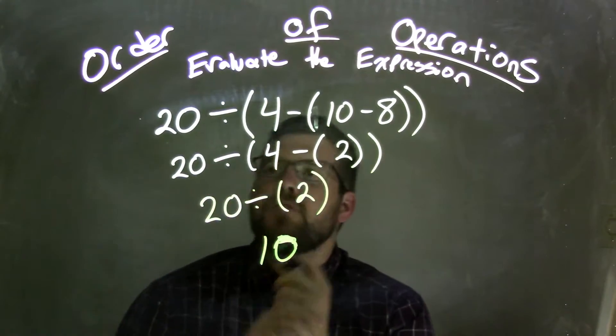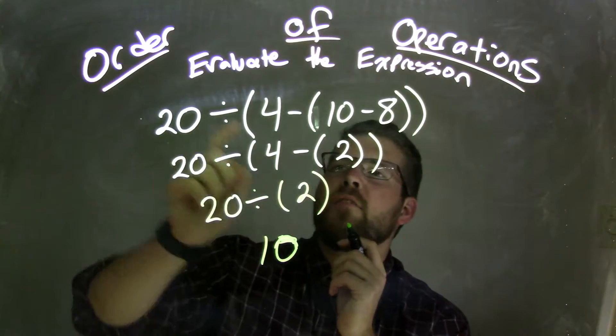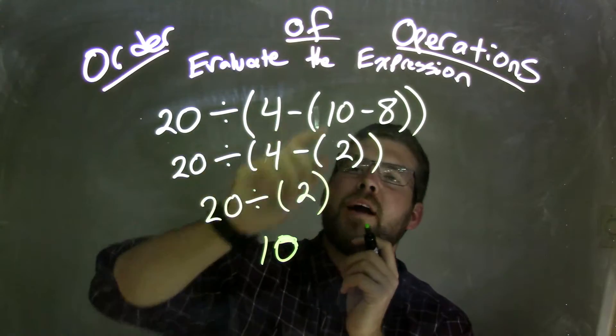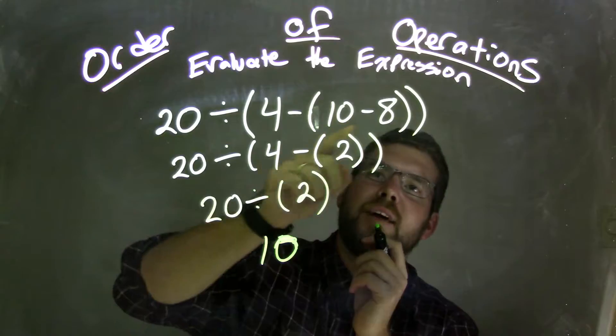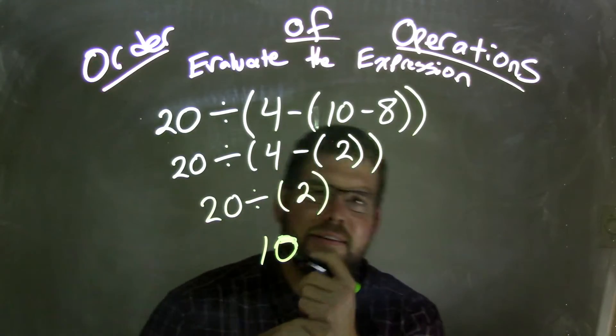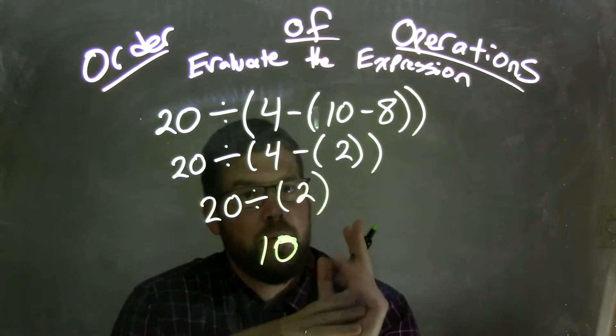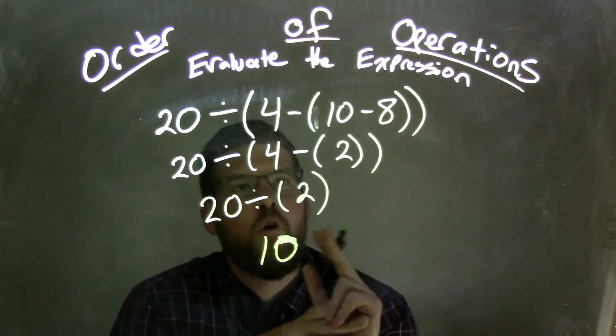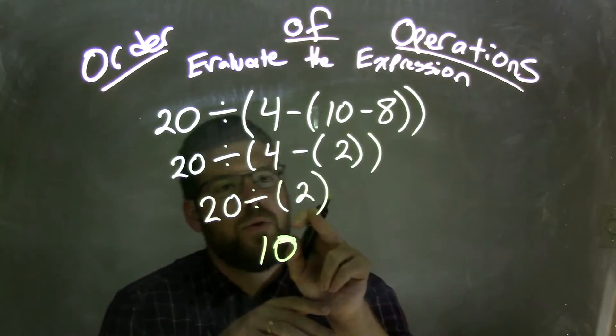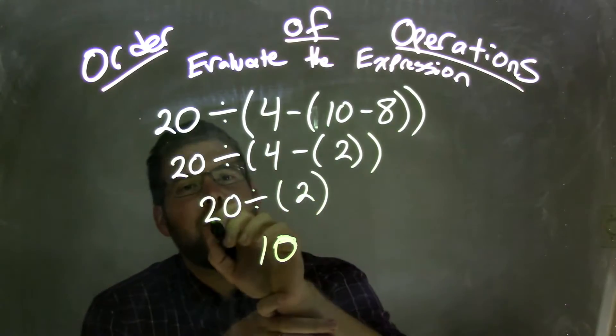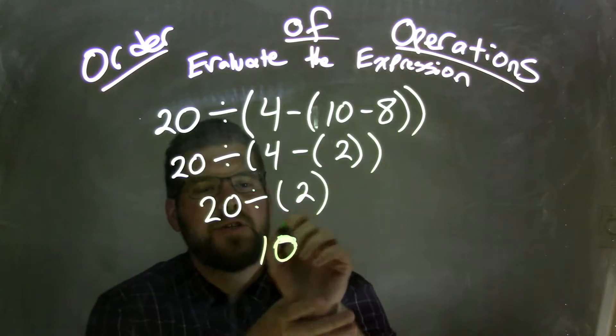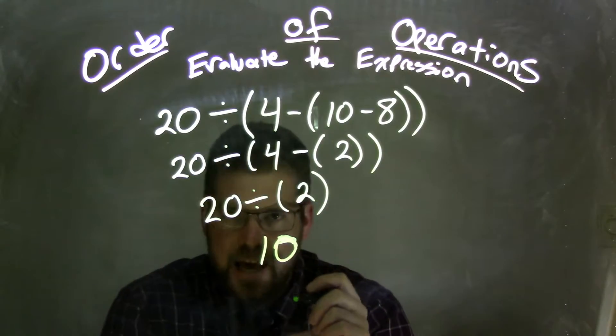All right, so we started with 20 divided by 4 minus parentheses 10 minus 8. 10 minus 8 was 2. 4 minus 2 was 2. And 20 divided by 2 is 10.